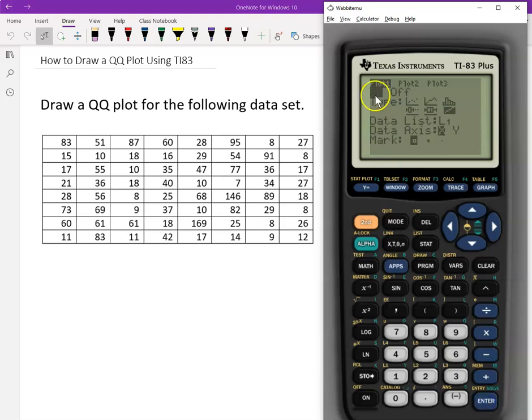And then choose the type. QQ plot is the last one. Already chosen. So we go down. If yours is not highlighted there, you have to highlight the type of the plot.